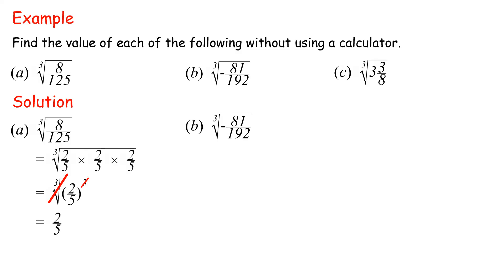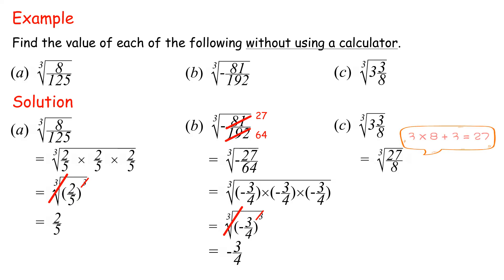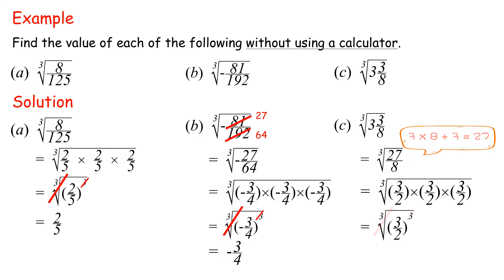B: Cube root of negative 81 over 192. Simplify the fraction first, equals cube root of negative 27 over 64, equals cube root of negative 3 quarters times negative 3 quarters times negative 3 quarters, equals cube root of negative 3 quarters cubed, equals negative 3 quarters. C: Cube root of 3 and 3 eighths. Convert to improper fraction first, equals cube root of 27 eighths, equals cube root of 3 over 2 times 3 over 2 times 3 over 2, equals cube root of 3 over 2 cubed, equals 3 over 2, equals 1 and 1 over 2.